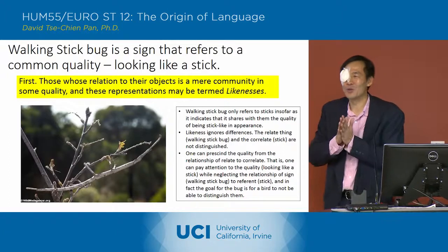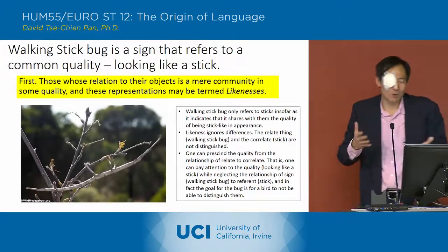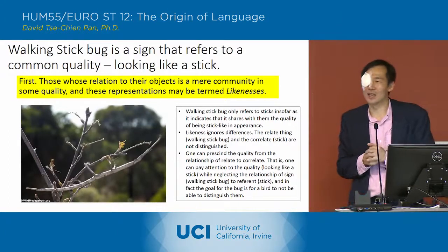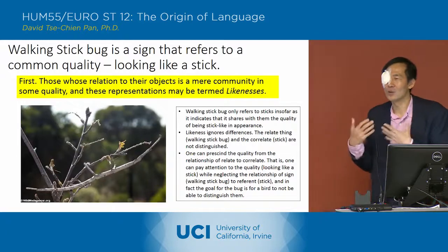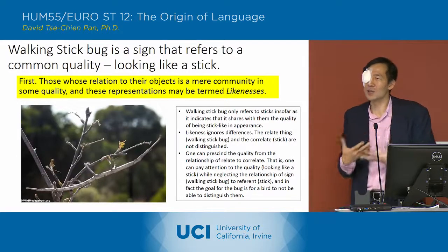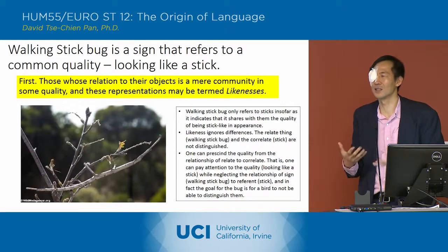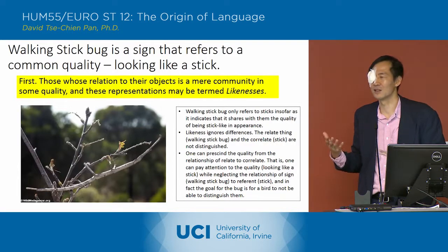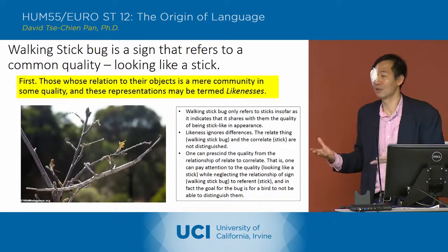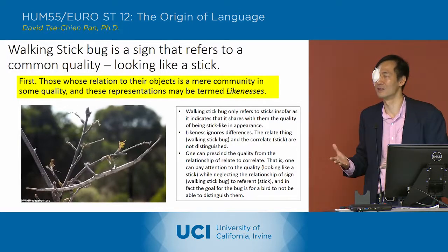What Peirce is indicating — or what I'm saying that Peirce is indicating — is that the walking stick bug is actually communicating to the bird. And what's the content of that communication? It's saying, 'I am a stick.' That's really what it's saying: I am a stick.